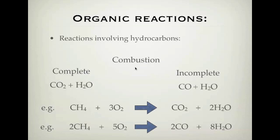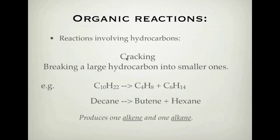Our next type of reaction is cracking. Cracking is breaking a large hydrocarbon into smaller ones. How you do it is you run it over a catalyst — some type of catalyst. What happens is the large hydrocarbon breaks down into two smaller ones. An example here is decane, which has 10 carbons and 22 hydrogens. If we break this down, we get two smaller molecules — a butene and a hexene.